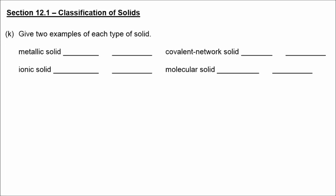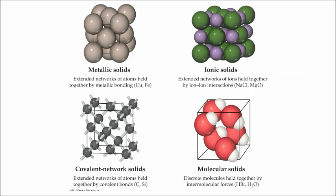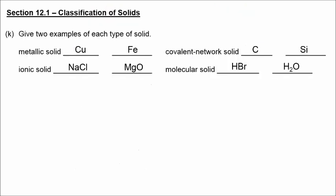Two examples of each type of solid. For metallic solids, you might choose copper and iron as examples, but any metals would be good examples. For ionic solids, something like sodium chloride or magnesium oxide. For covalent network solids, we have examples of diamond or graphite, which is essentially carbon or silicon, and there's other examples like quartz, which is silicon oxide. And molecular solids, these are going to be things like covalent compounds, so hydrogen bromide or water, for example.